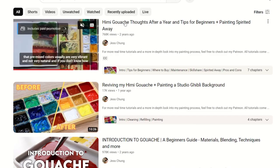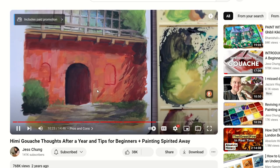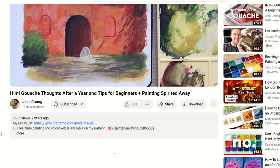I recently watched Jess Chung's painting video and the texture of the Hemi jelly gouache she used really appealed to me. They look like a happy middle ground between cake and tube watercolor. So that's what I bought.